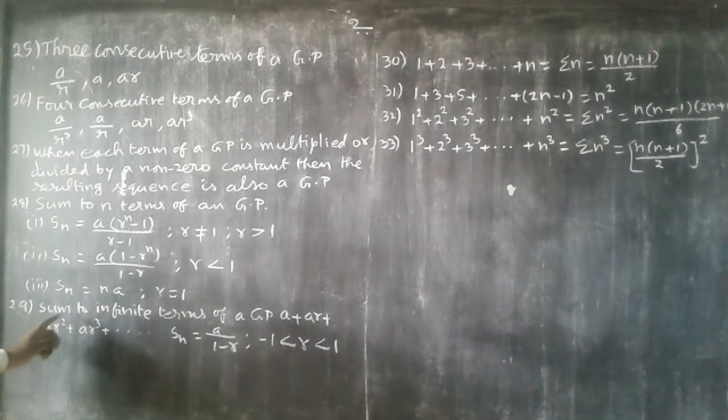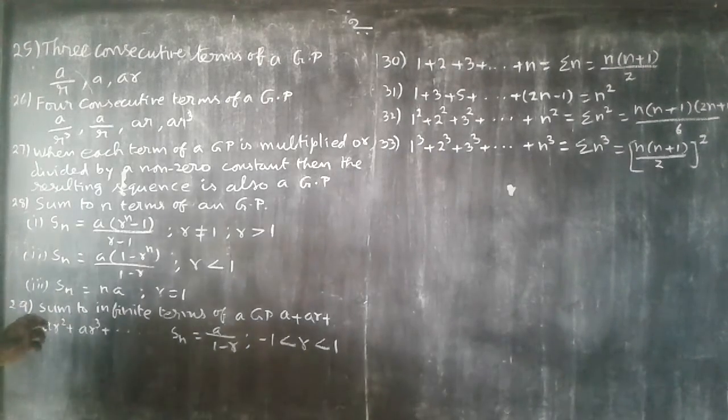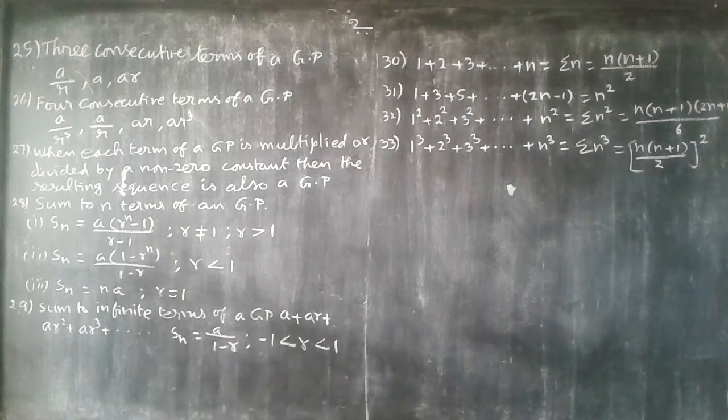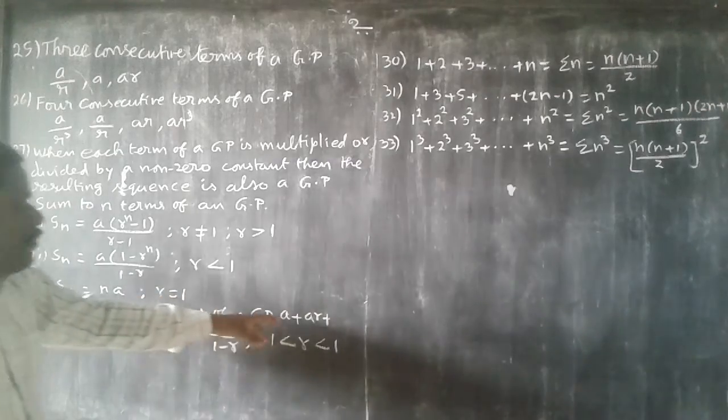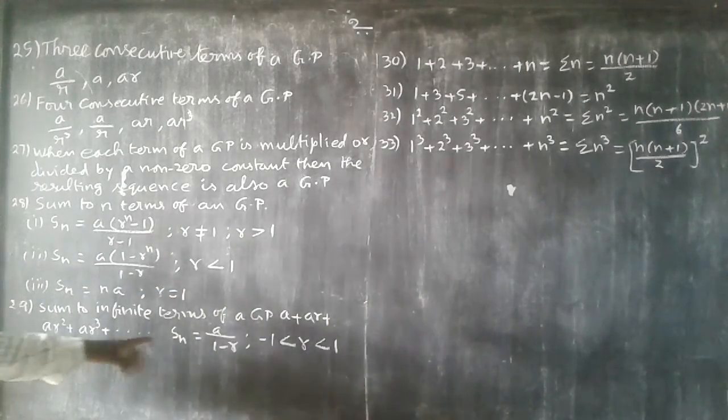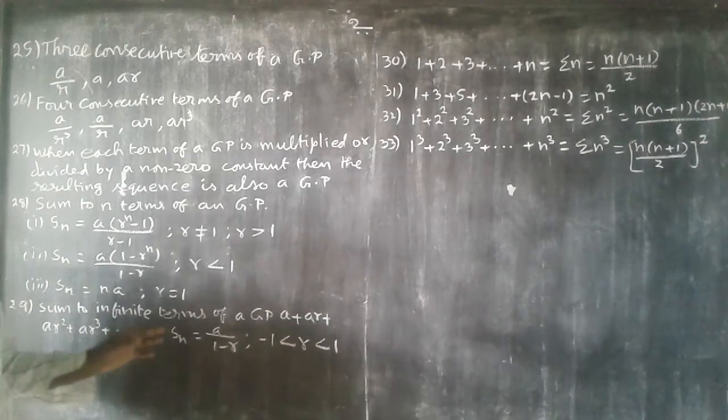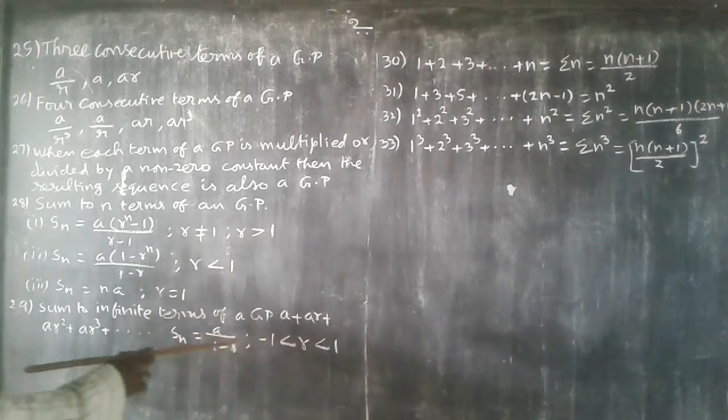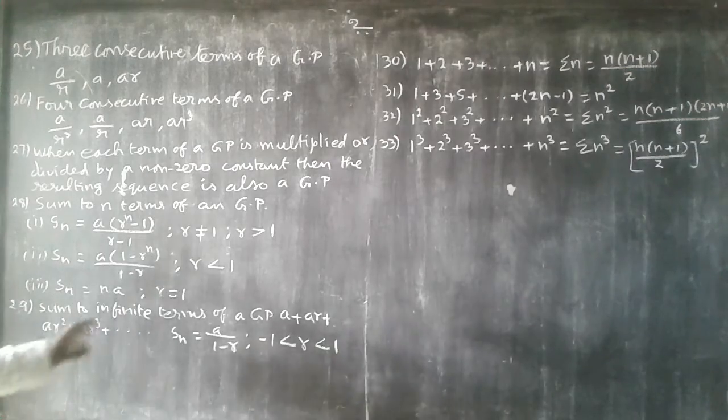29th. Sum to infinite terms of a GP. Suppose the GP is infinite: a plus ar plus ar square plus ar cube and so on. The formula is a by 1 minus r, where minus 1 less than r less than 1.